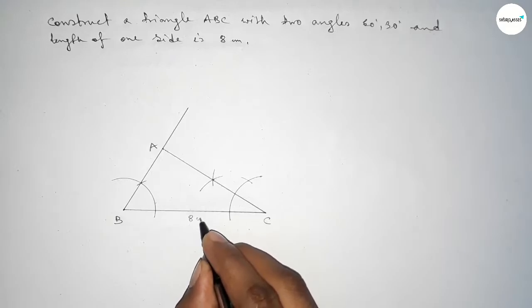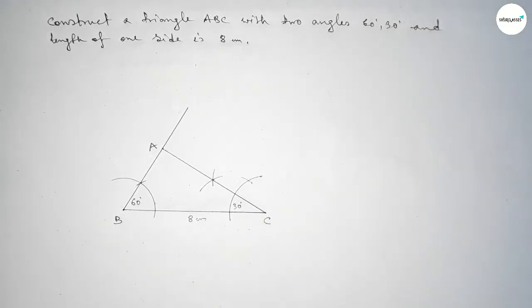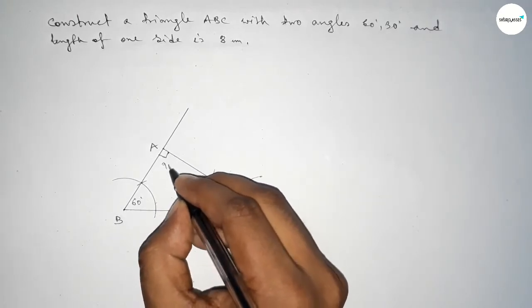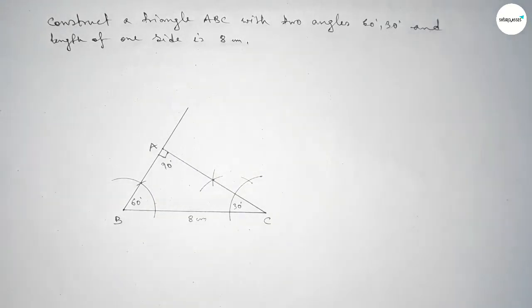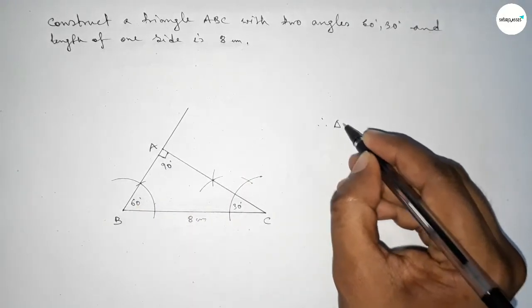So this is 8 centimeters, this angle is 60 degrees, this angle is 30 degrees, and angle A is obviously 90 degrees, since 30 plus 60 equals 90, and 90 plus 90 equals 180. Therefore, triangle ABC is a right-angle triangle.